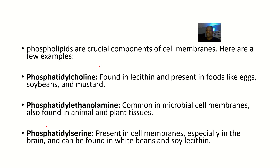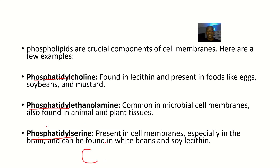Before we look at the structures, I want you to develop a mnemonic to remember the examples of phospholipids. Everything starts with 'phosphatidyl,' so we move to the next word. Here we have choline, which is C; ethanolamine, which is E; and serine, which is S. So the mnemonic to remember examples of phospholipids is CES — phosphatidylcholine, phosphatidylethanolamine, phosphatidylserine.